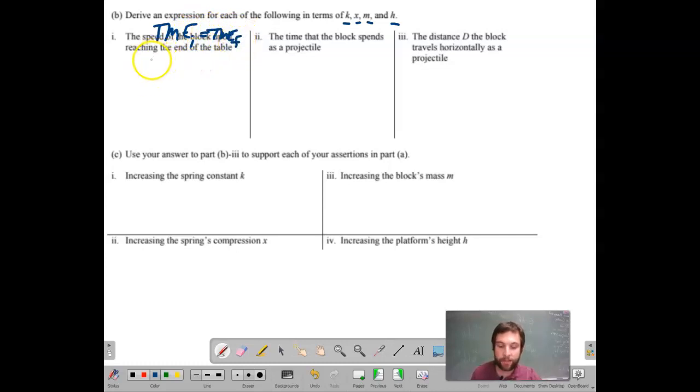What kind of energies do I have in the beginning? I have just spring potential energy. Well, I have spring potential energy and gravitational potential energy, remember. And then in the end, I have kinetic energy plus my gravitational potential energy. I can remove those from each side and what I'm left with is 1 half kx squared equals 1 half mv squared. And what are we solving for? The speed of the block as it reaches the end of the table.